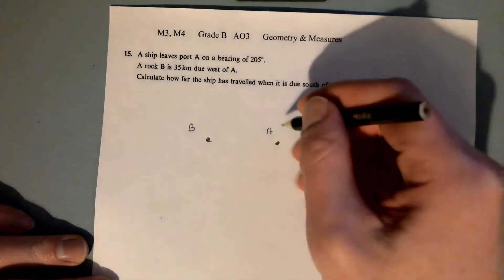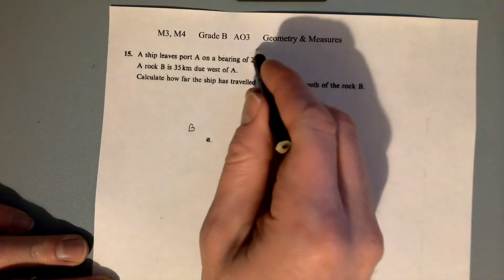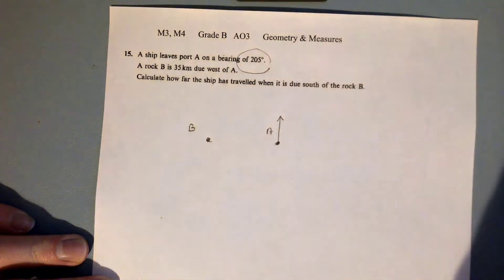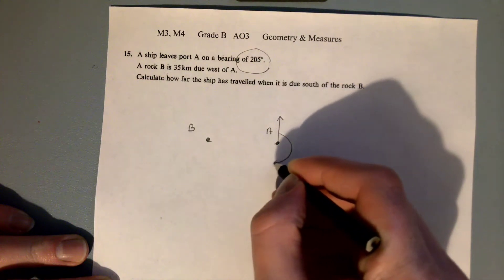The ship leaves port A on a bearing of 205. Bearings are always measured from the north line, and 205 degrees goes past 90 degrees, past 180 degrees, and it's going to be down towards the bottom left essentially.